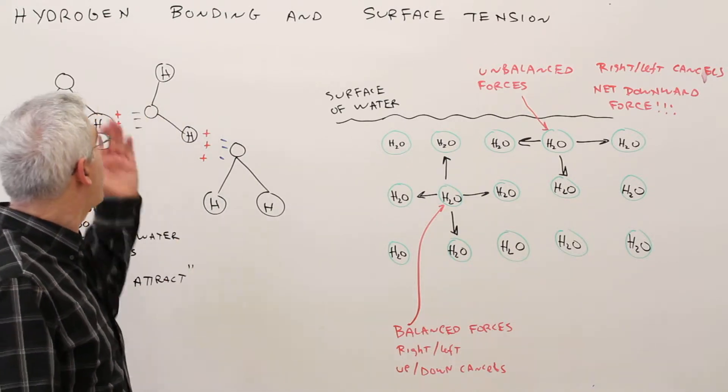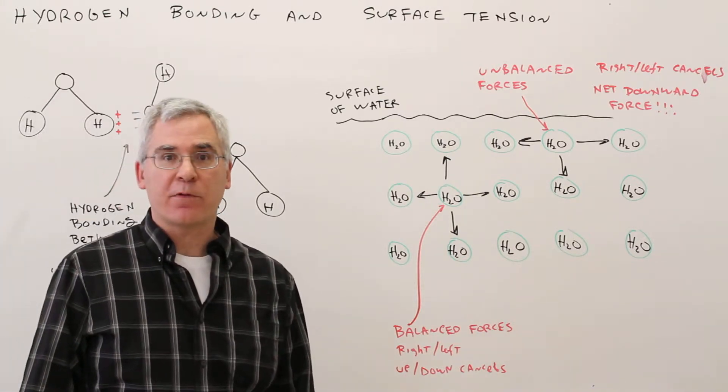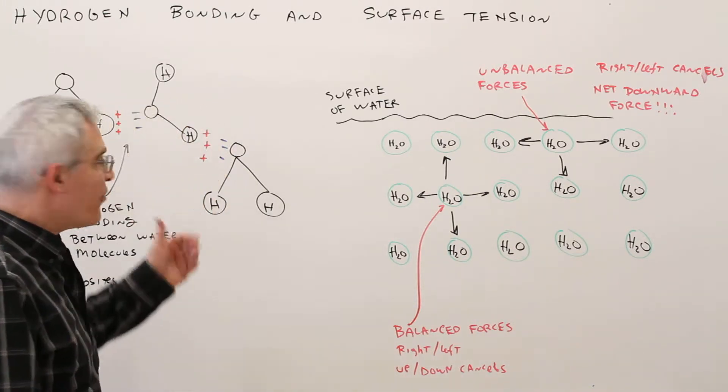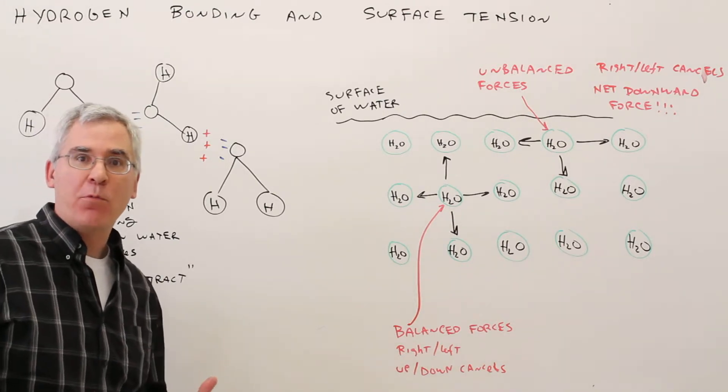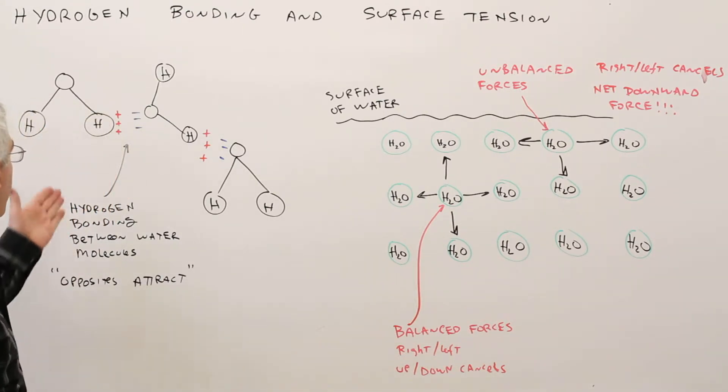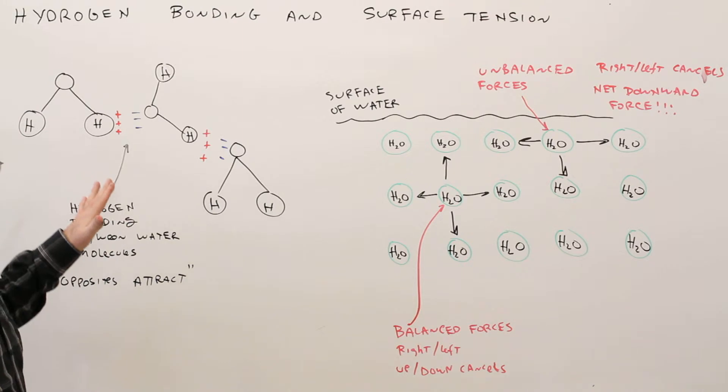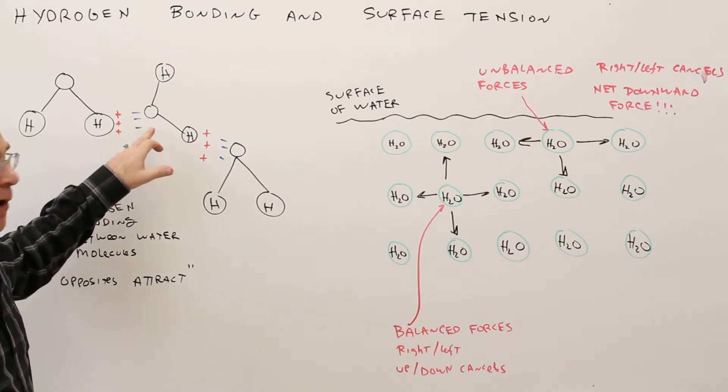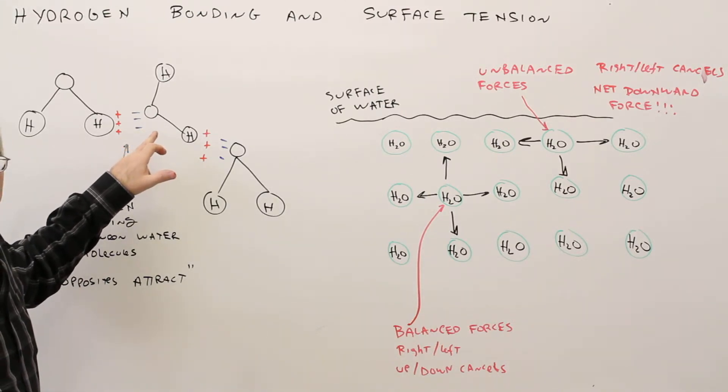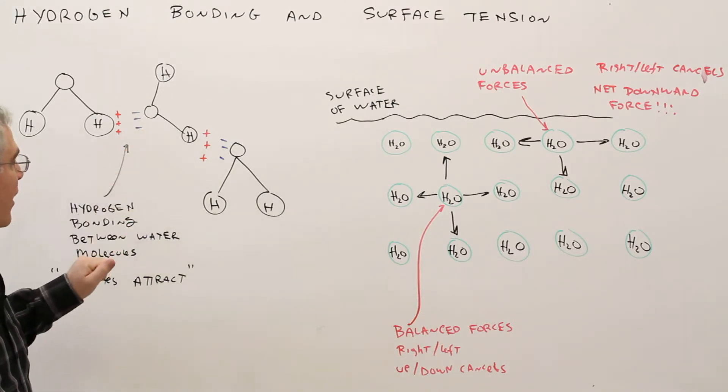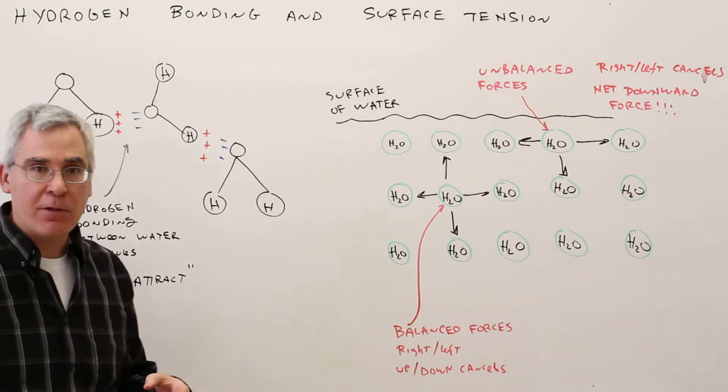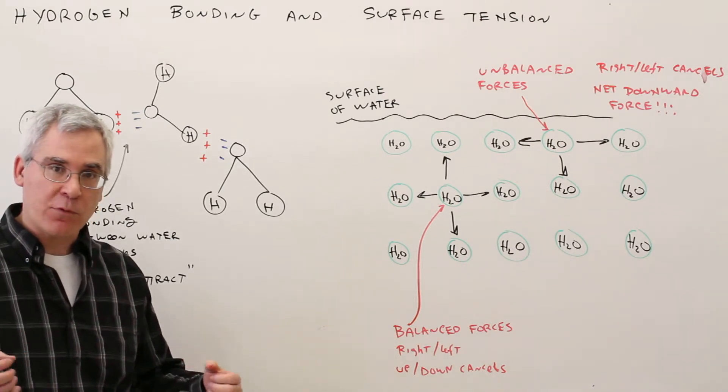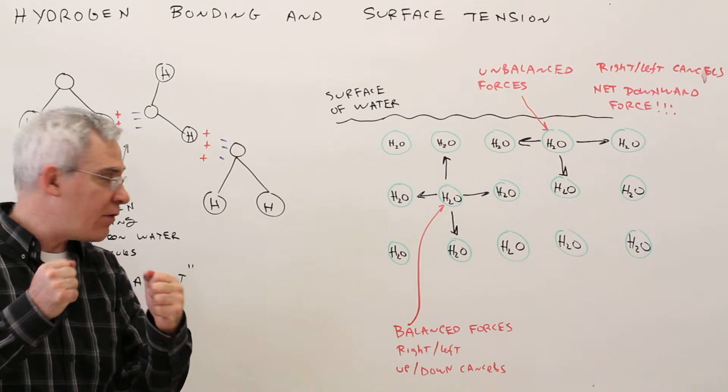Next we need to discuss hydrogen bonding and surface tension. Hydrogen bonding occurs between water molecules and this is how it works. So as we discussed before, there's a partial positive charge on the hydrogen side and a partial negative charge on the oxygen side. And hopefully you learned in elementary school that opposite charges attract.